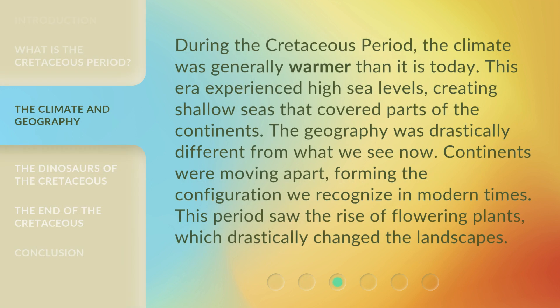During the Cretaceous period, the climate was generally warmer than it is today. This era experienced high sea levels, creating shallow seas that covered parts of the continents. The geography was drastically different from what we see now. Continents were moving apart, forming the configuration we recognize in modern times. This period also saw the rise of flowering plants, which drastically changed the landscapes.